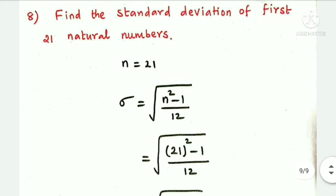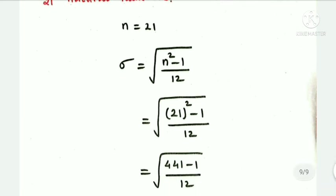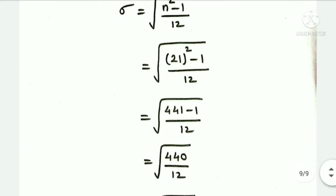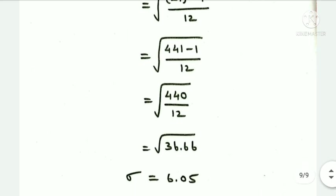Next question: find the standard deviation of the first 21 natural numbers. Here n equals 21. The formula for standard deviation of first n natural numbers is: sigma equals root of (n squared minus 1) divided by 12. So that is root of (441 minus 1) by 12, which is root of 440 by 12, giving root of 36.66. The standard deviation sigma answer is approximately 6.05.